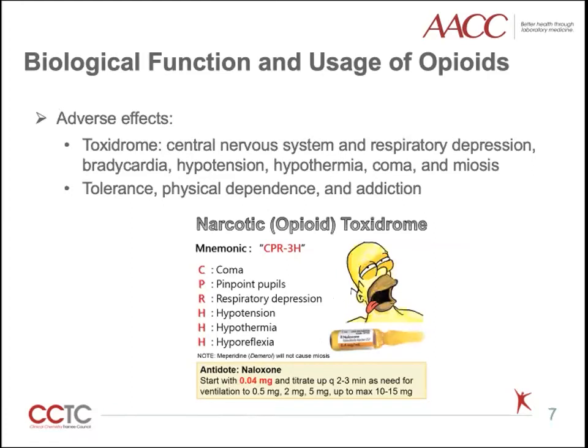However, opiates do have adverse effects. The opiate-specific toxidrome includes central nervous system and respiratory depression, bradycardia, hypertension, hypoxemia, coma, and miosis. Moreover, long-term use of opiates, even as prescribed by a doctor, can develop tolerance, physical dependence, and addiction.